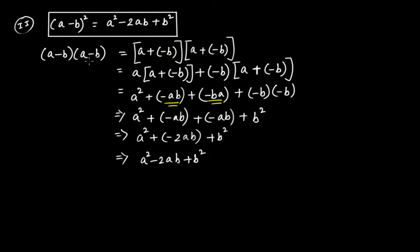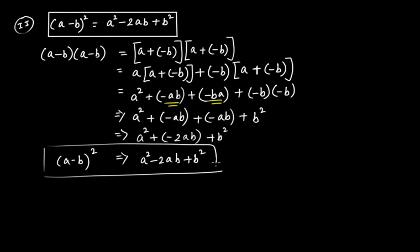So (a − b) whole squared equals a squared minus 2ab plus b squared. This is the second standard identity. Remember this — when we solve problems we'll use it and you can apply it directly.